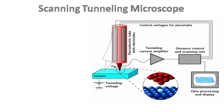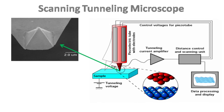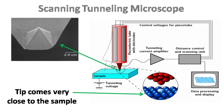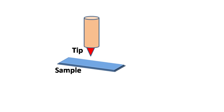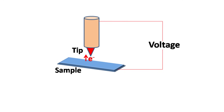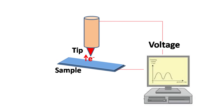The scanning tunneling microscope is based on this phenomenon. It has a small nano-size tip which comes very close to the sample. When an electric potential difference is applied between the tip and the sample, the electrons from the sample are tunneled to the tip. The small electric current produced by the tunneled electrons is amplified and sent to the computer.